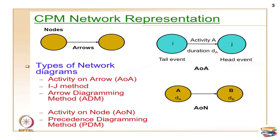Other names for AOA are the IJ method and arrow diagramming method. For AON, we also call it the precedence diagramming method, but PDM is generally referred to as an advanced version of AOA. This is all on the background.